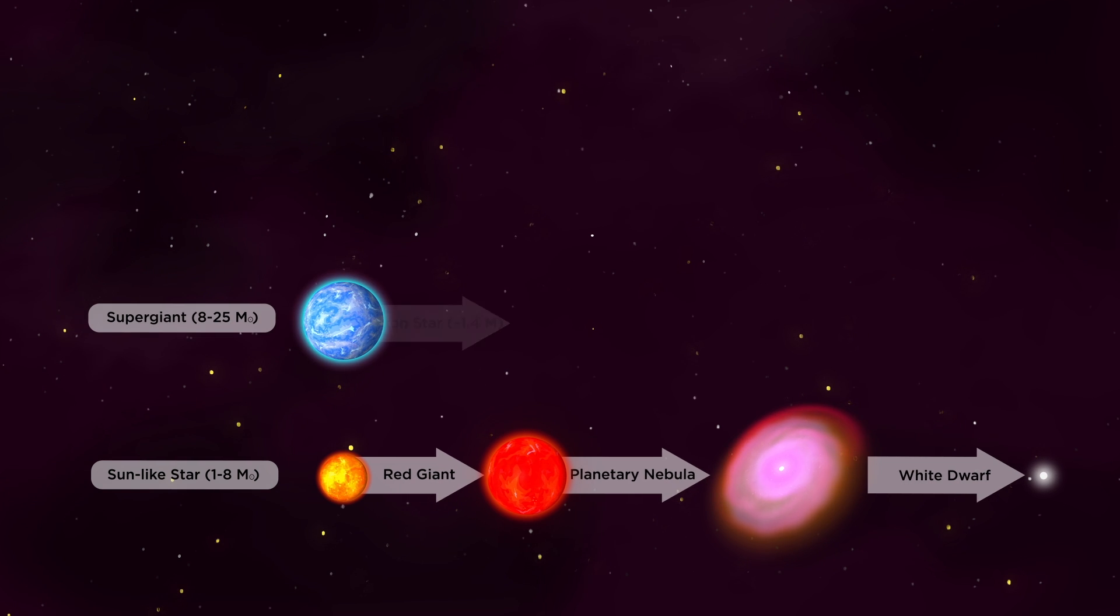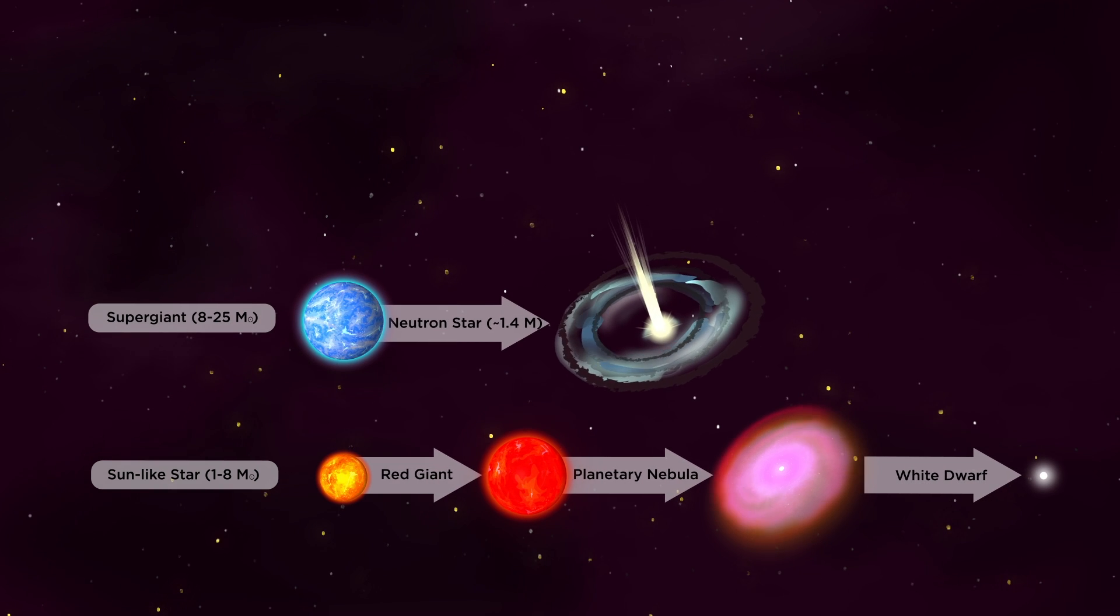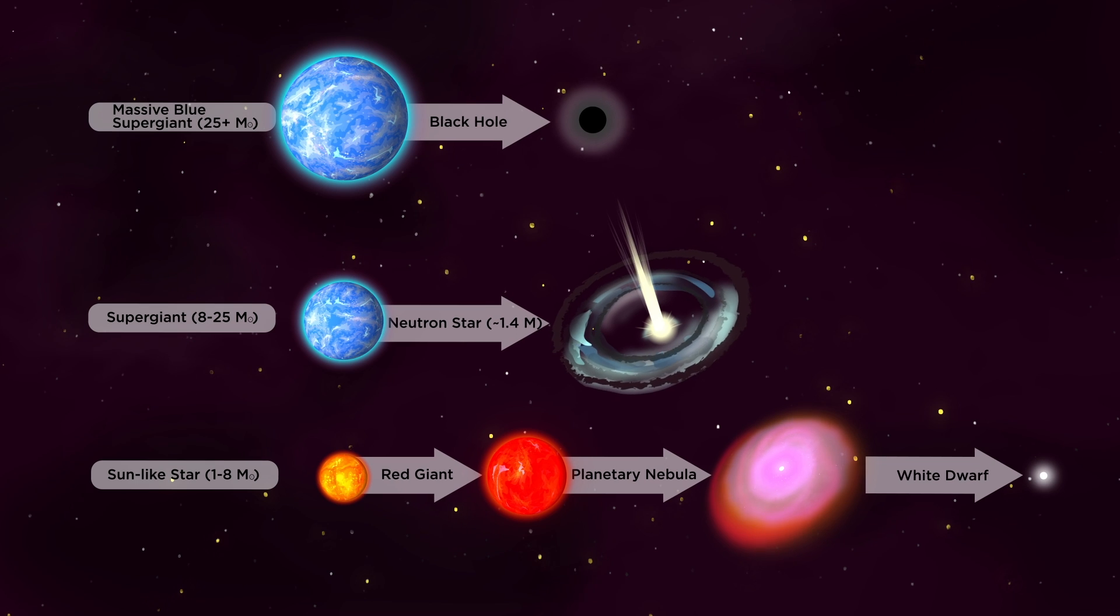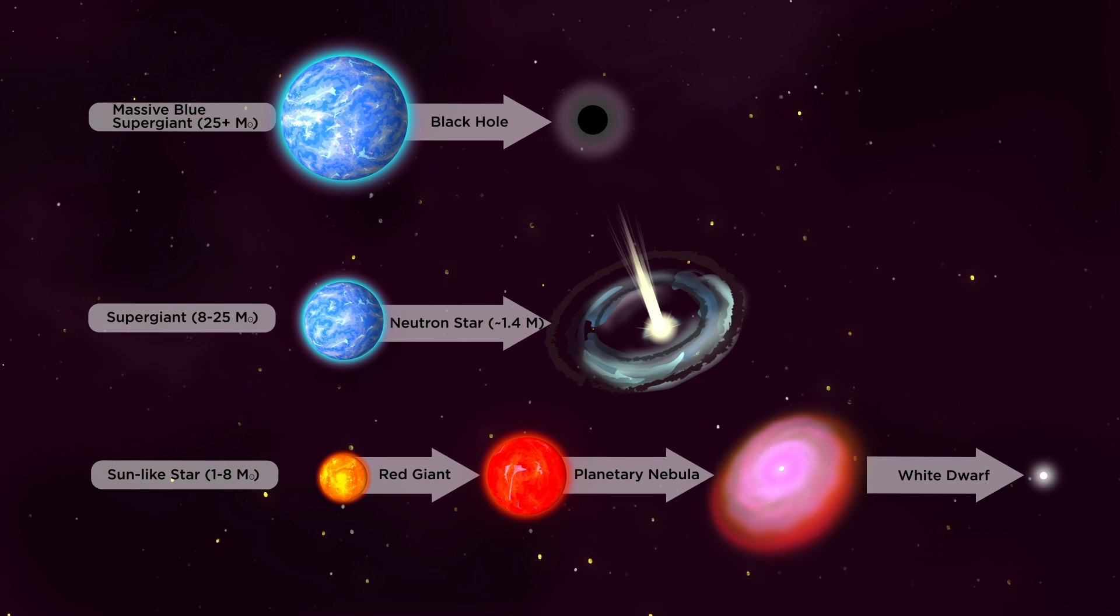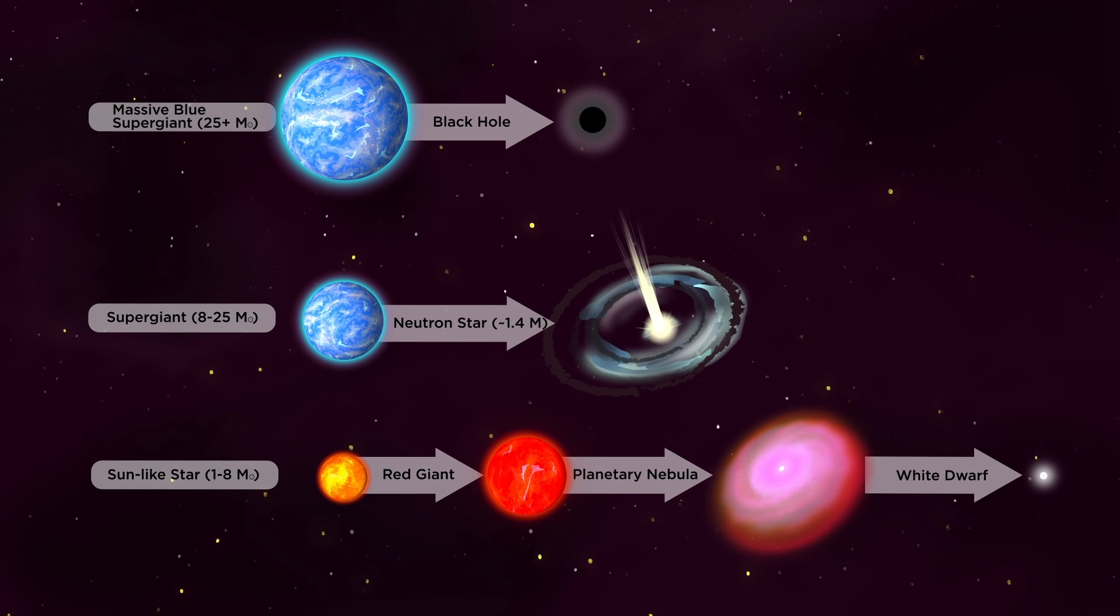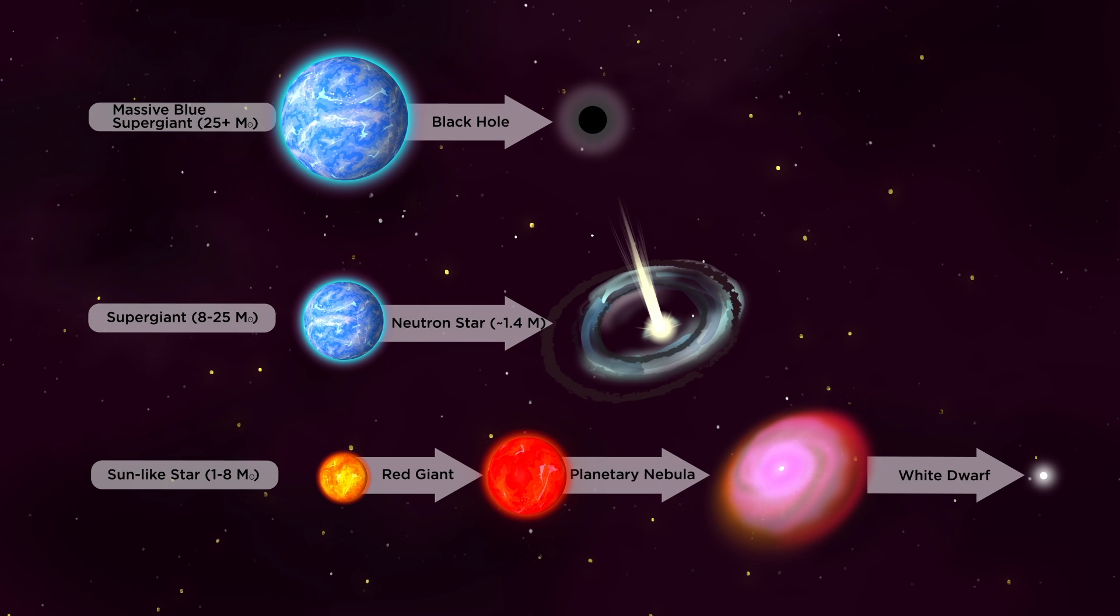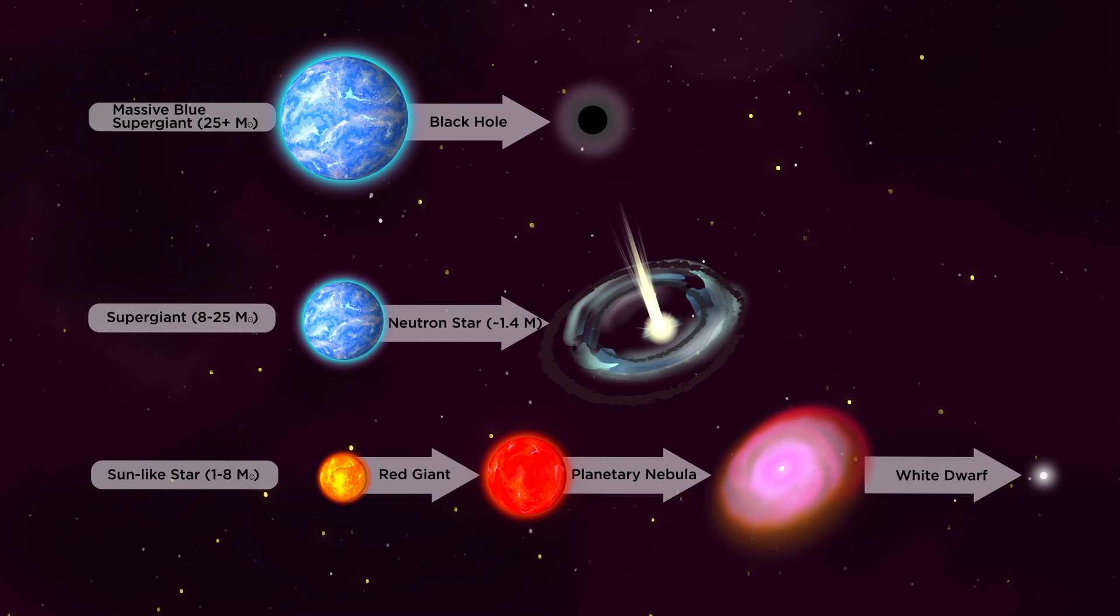Larger stars evolve into dense neutron stars and very large stars become dense inescapable black holes. By current estimates any star over 25 solar masses is destined to become a black hole.